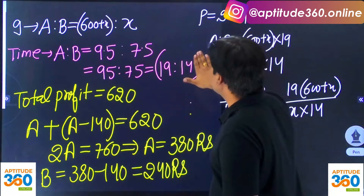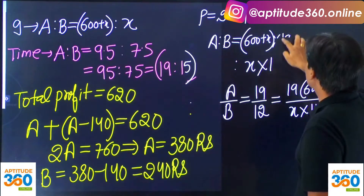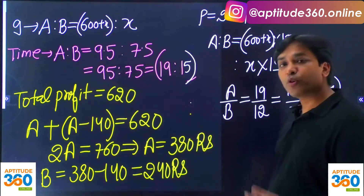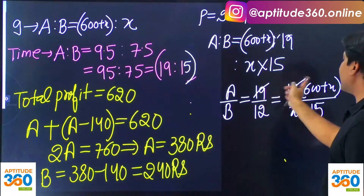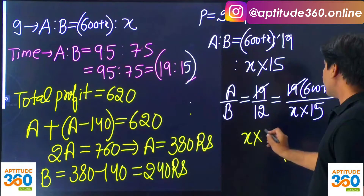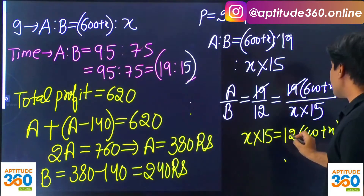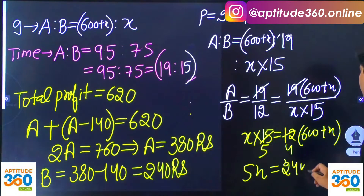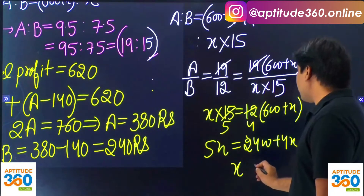Correcting: the time value is 15, not 14. So the equation is (600 + X) × 19 to X × 15, equal to 19 to 12. The 19s cancel from both sides, giving X × 15 = 12 × (600 + X). Simplifying: 15X = 7200 + 12X, so 5X = 2400 + 4X — wait, simplifying properly: 15X = 12 × 600 + 12X, which gives 3X = 7200, and the value of X comes out as 2400.